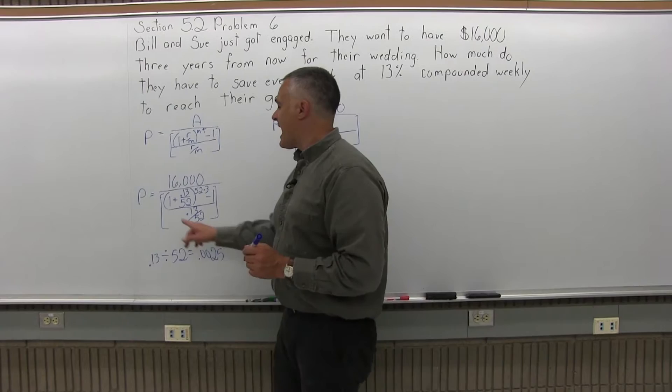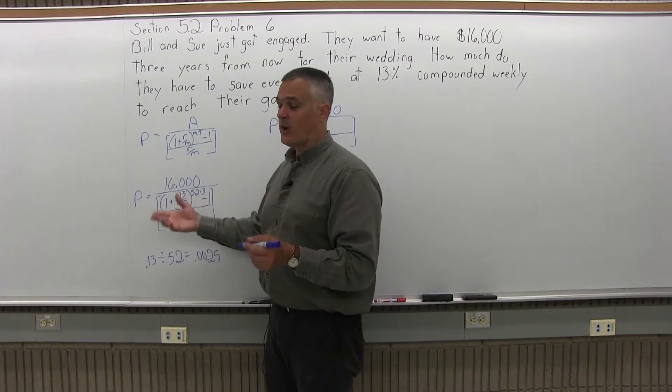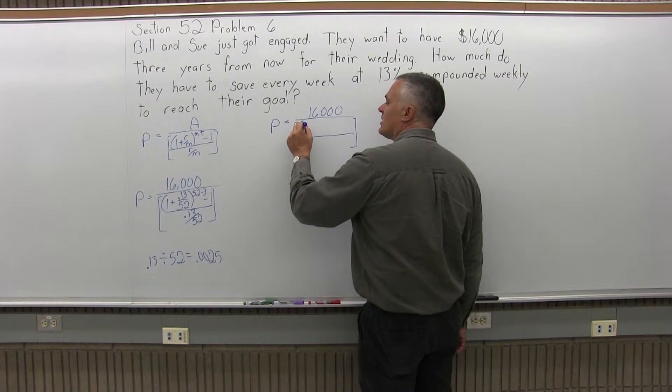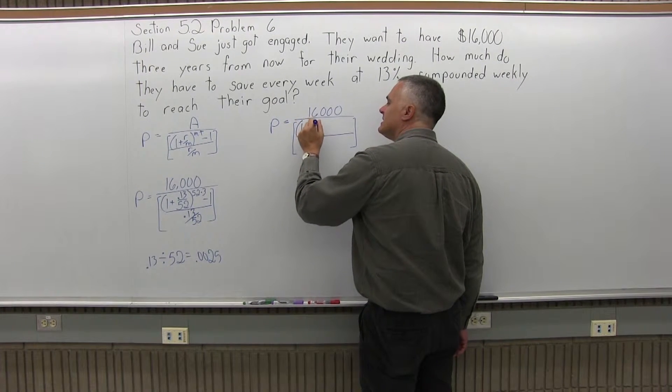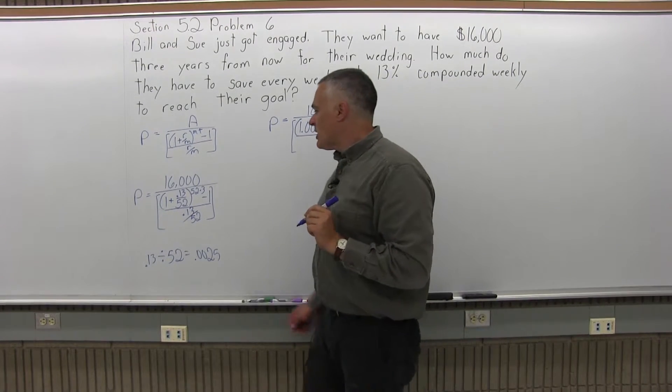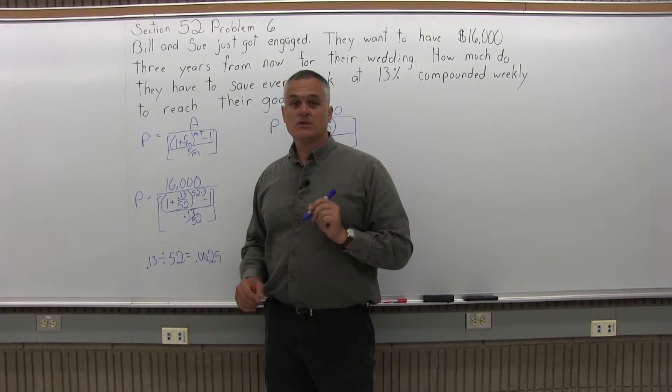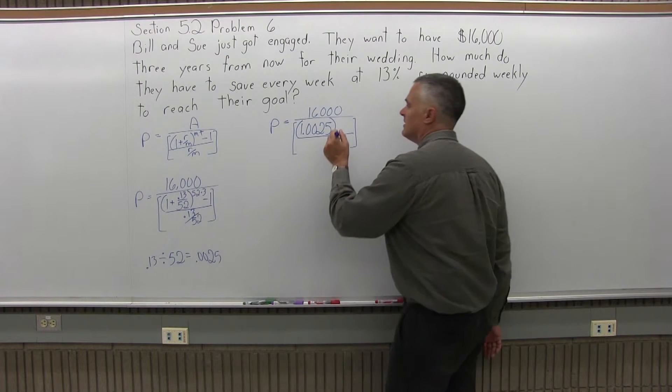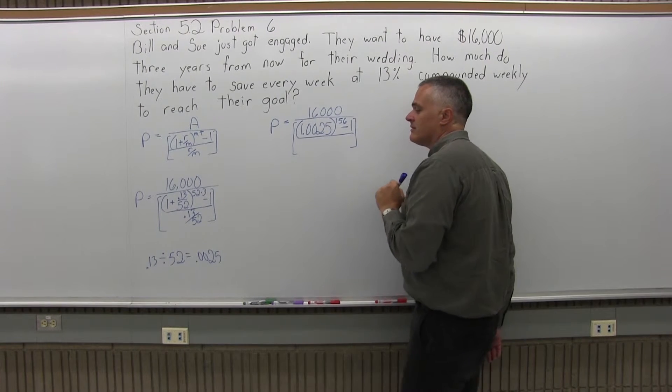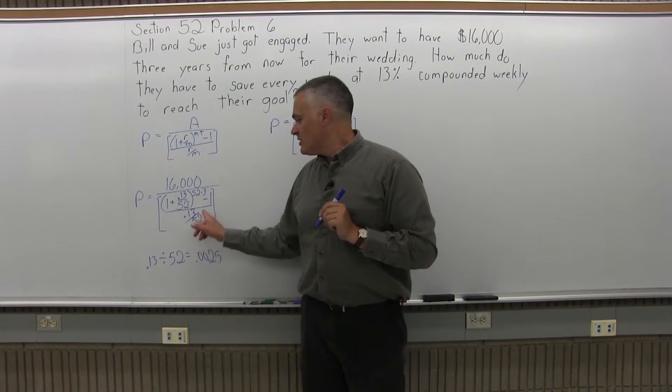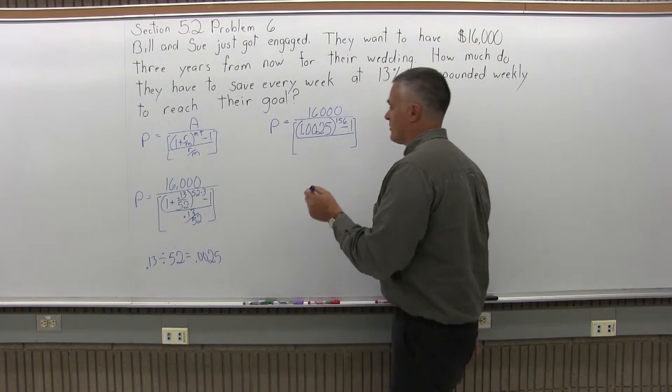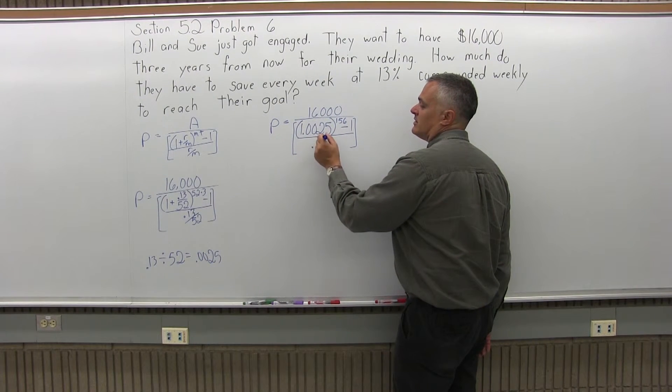And that answer, you're going to add 1 to it because there's a 1 in front of the 0.13 over 52. So in your parentheses, you have 1.0025. The exponent on the parentheses, 52 times 3 is 156. And after the parentheses, there's a minus 1. Don't forget the minus 1. And in the denominator of the brackets, 0.13 over 52 again, which of course comes out to 0.0025.